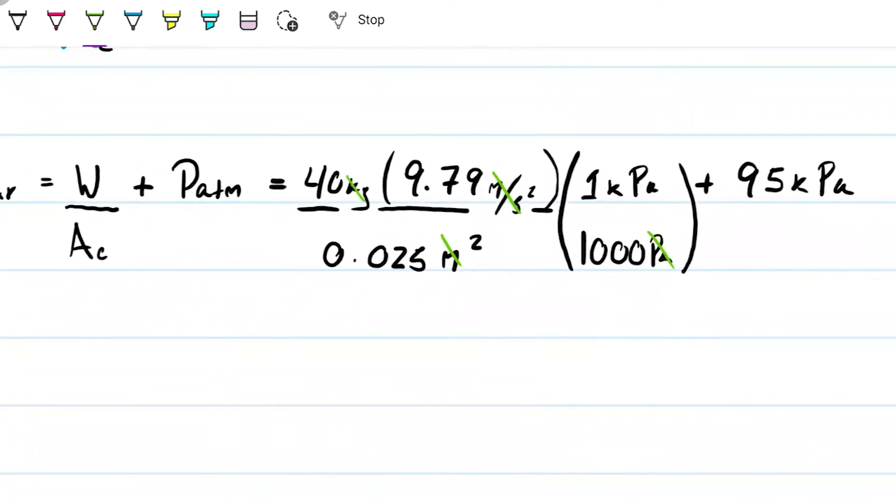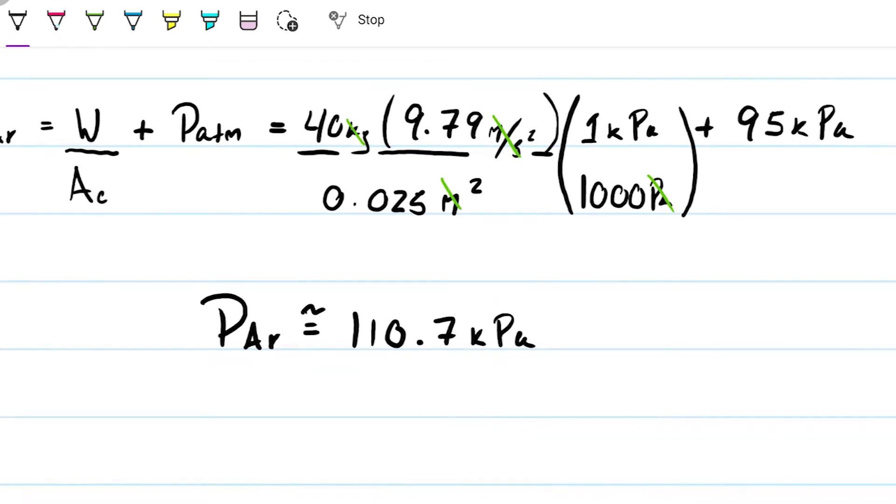And then we're going to get, sum this guy up, we're going to get that this fella here is 15.664 kilopascals, so therefore the pressure of the argon that's pushing up on our system is approximately 110.7 kilopascals. And that's going to be our answer right there.